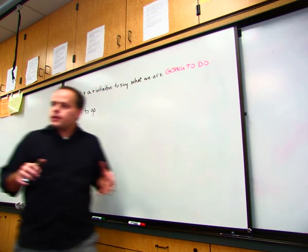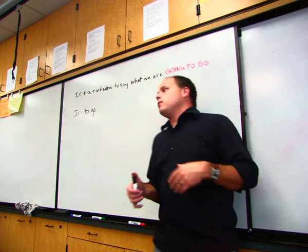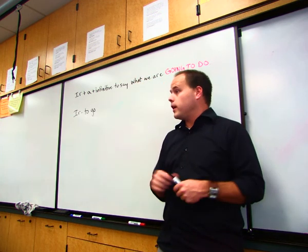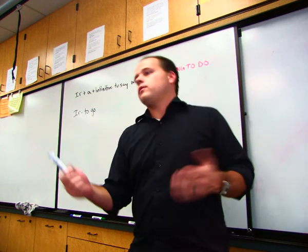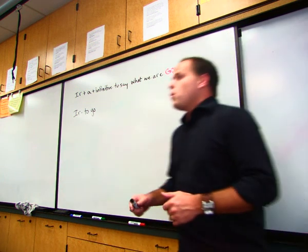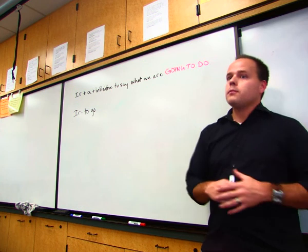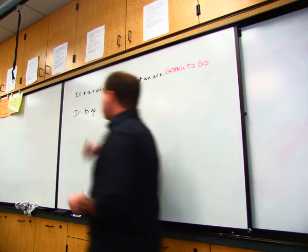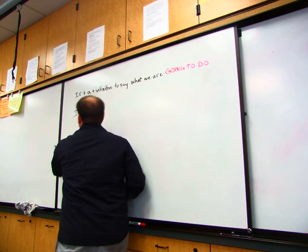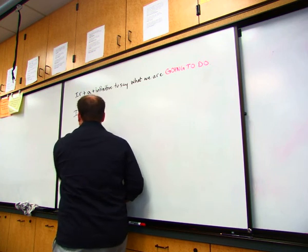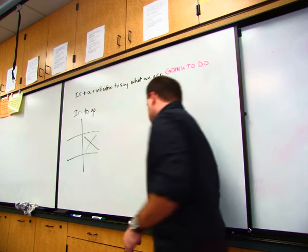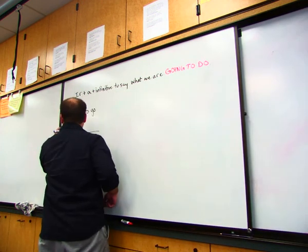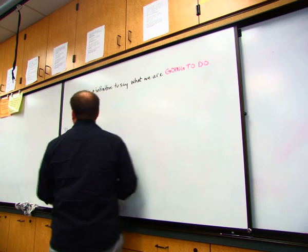Now, have you ever said, I'm going to study? Well, you've probably not said that. You've said I'm going to play video games, right? Something that you're going to do. That's what we're talking about. We're going to go to the movies. That's talking about something you're going to do. So we take the verb ir, to go, and we remember the conjugations of it. What's the yo form? Yo voy.